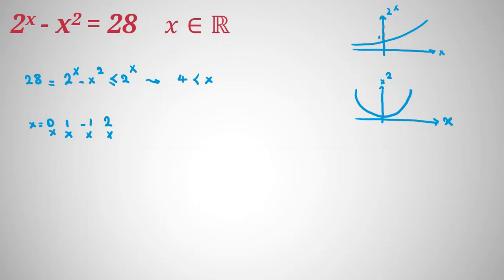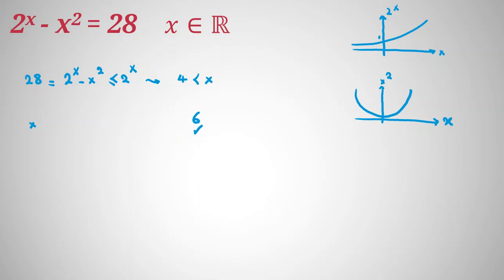For x equals 2: 2 squared minus 2 squared is 4 minus 4, which is 0. For x equals 3: 2 cubed minus 9 is negative 1. Not possible. For x equals 4: 2 to the 4 minus 4 squared is 16 minus 16, which is 0. For x equals 5: 32 minus 25 is 7. Not possible. For x equals 6: 64 minus 36 equals 28. So x equals 6 works — we found one answer.